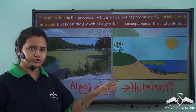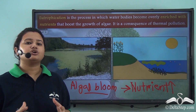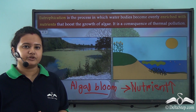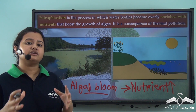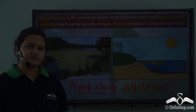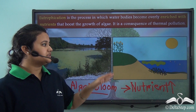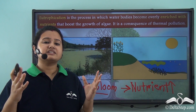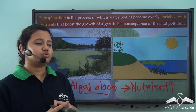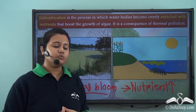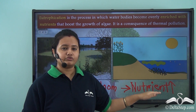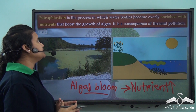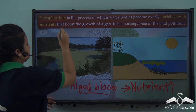Why does the availability of nutrients in the water body suddenly rise? The industries release overheated water into water bodies. The solubility of a solvent like water increases with increase in temperature, so at higher temperatures water can dissolve more nutrients. This overheated water released into water bodies is rich in nutrients, which helps in the growth of algae — in other words, increased nutrient availability leads to algal bloom.